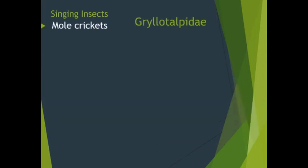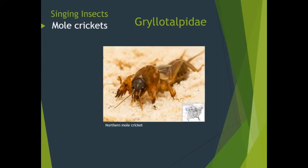Only one species in the family Gryllotalpidae occurs in this region: the northern mole cricket, found along damp margins of streams, ponds, and floodplain wetlands. Males call from a closed burrow; calls are still loud enough to be heard above ground but are difficult to locate. After mating, the female may forcibly evict the male, seal up the burrow, and tend the eggs and young. Although they look fearsome, they are harmless to handle.